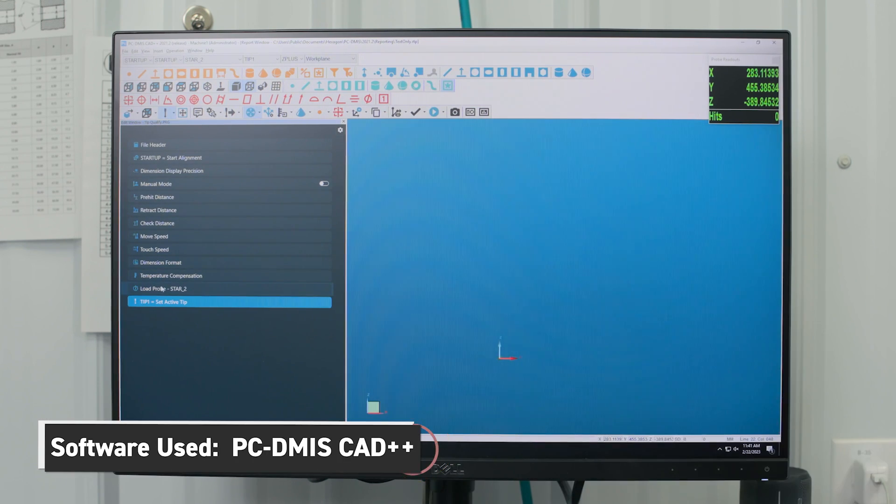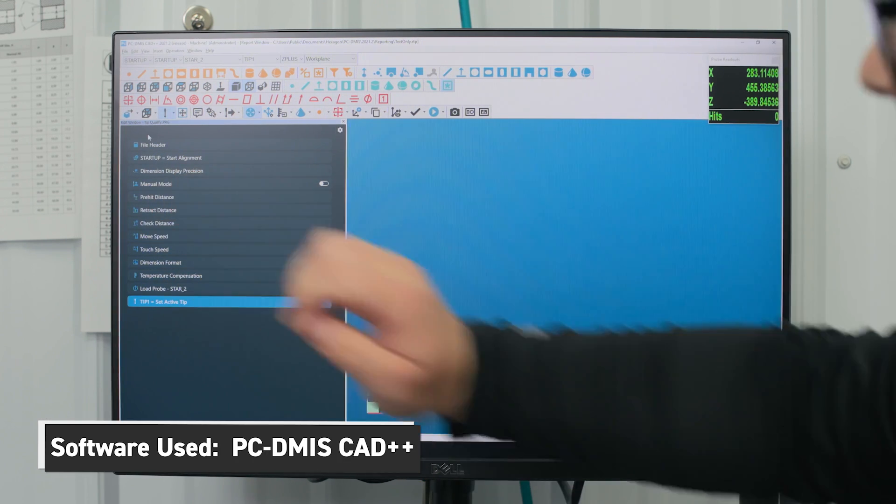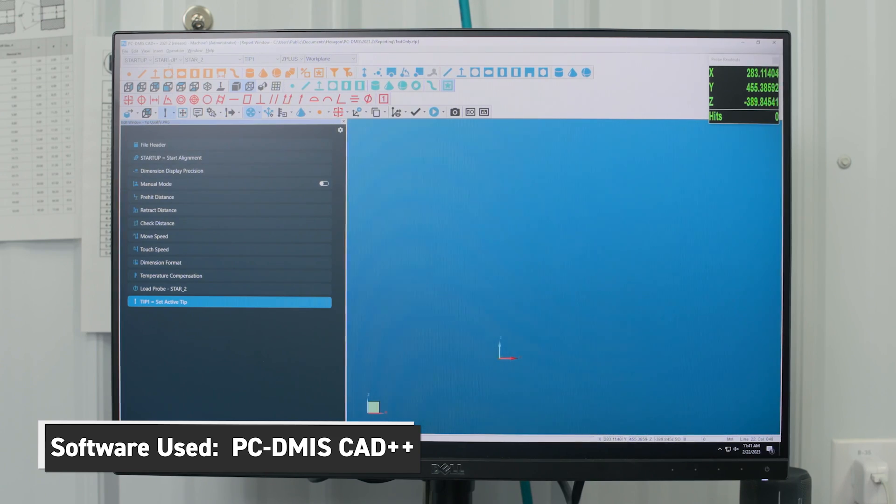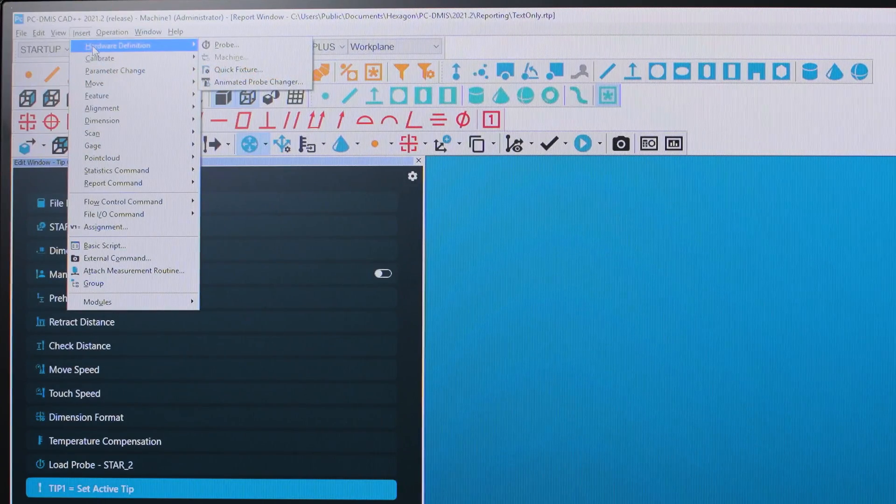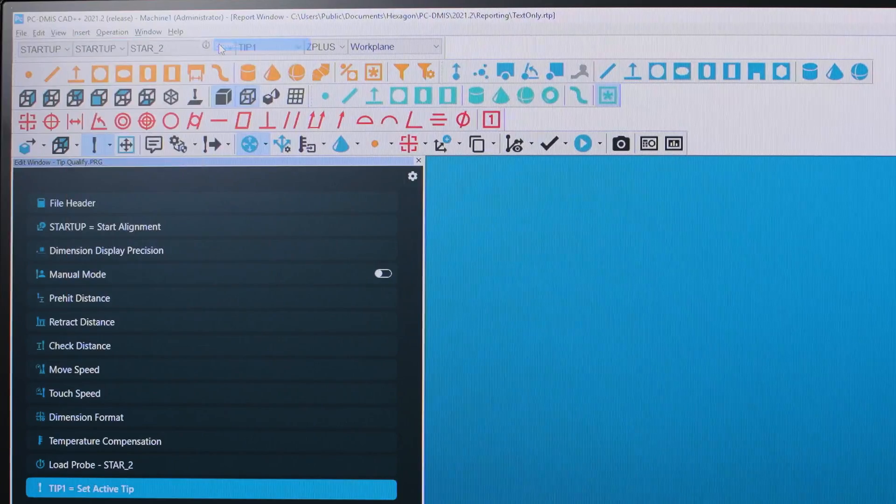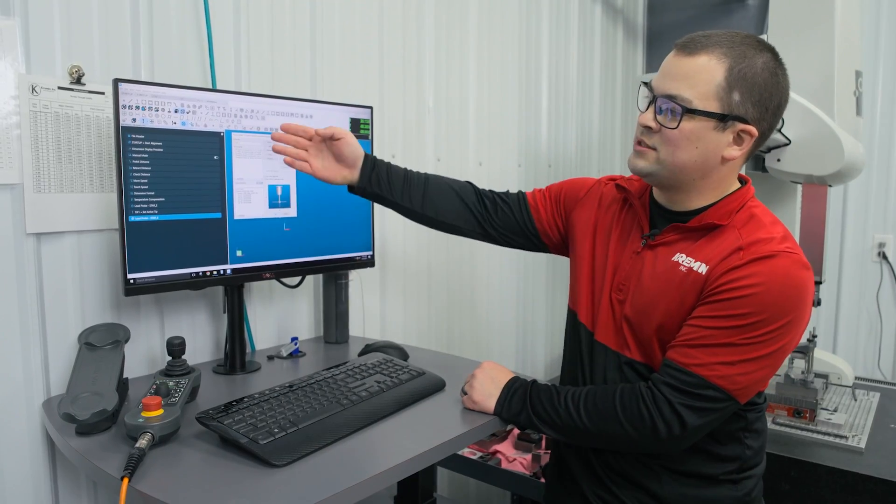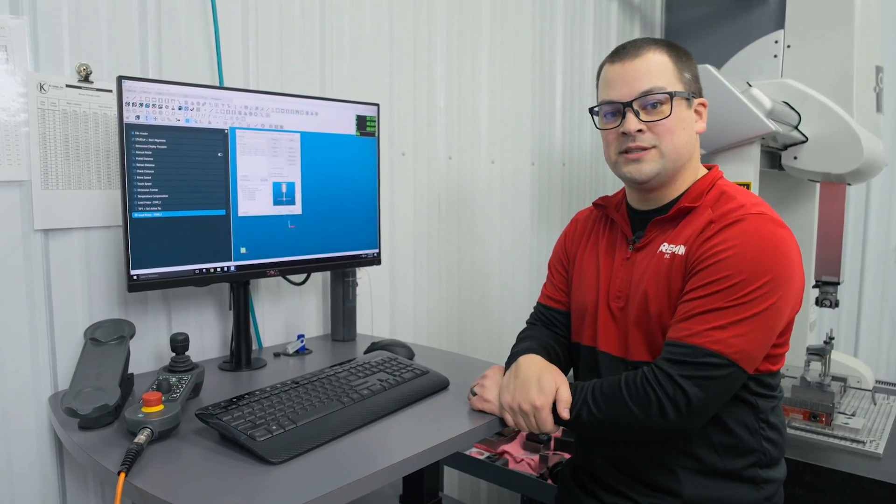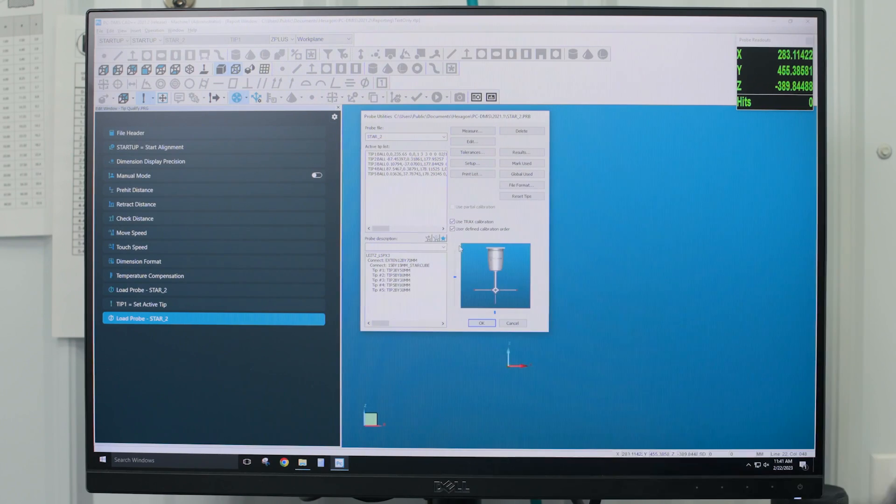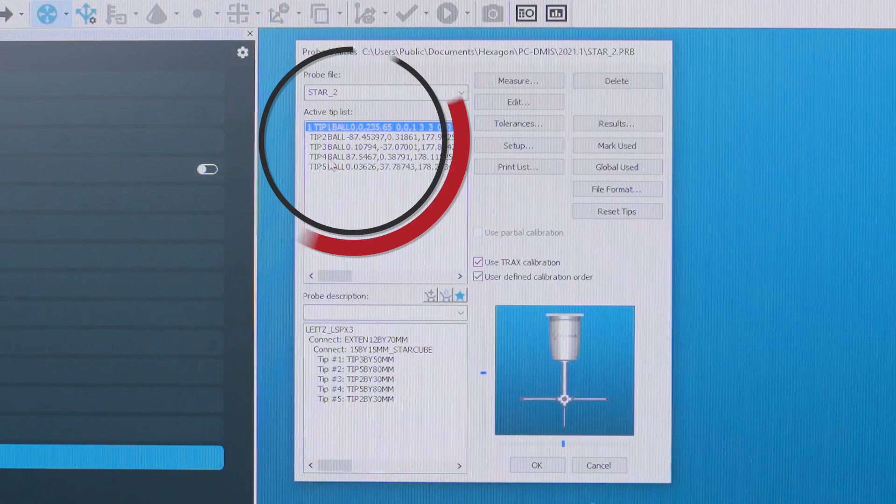We're going to get into our program. This is a dedicated tip qualifying calibrating program. We'll go to insert hardware definition and select probe. Now this brings up all of the probes that we have built for the CMM. We're going to be using our star two probe today, and we're going to use number one.